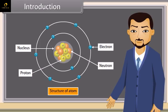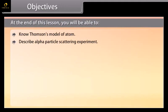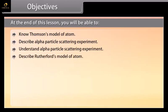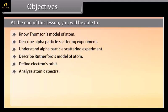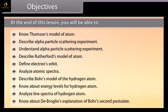Let us discuss more about atoms. At the end of this lesson, you will be able to: know Thomson's model of atoms; describe and understand alpha particle scattering experiment; describe Rutherford's model of atoms; define electron orbits; analyze atomic spectra; describe Bohr's model of the hydrogen atom; know about energy levels of the hydrogen atom; analyze line spectra of the hydrogen atom; and know about de Broglie's explanation of Bohr's second postulate.